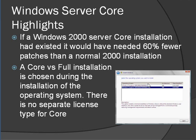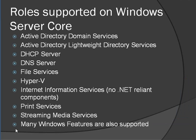In branch locations, use Server Core — it's less to patch, less to manage, and it has a smaller attack surface. I can run most of the roles: Active Directory, DHCP, DNS, File Services, Hyper-V, IIS, Print — most of the features are available. So this is very much a scaled-down version of Windows.